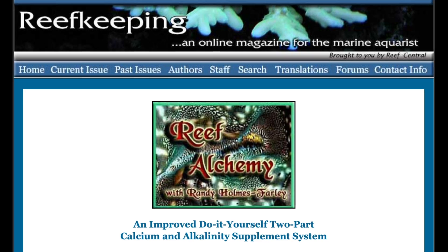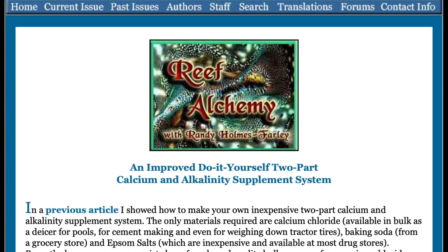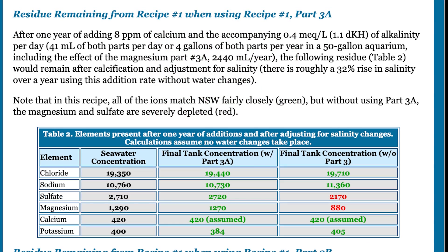Every gallon of many popular two-parts has around two cups of salt dissolved in them, so when you finish a gallon of each, you've effectively added four cups of salt to the tank — more when magnesium is included as well. There is a lot of chloride and sulfate in magnesium portions. Ray Holmes Farley's article, 'An Improved DIY Two-Part Calcium and Alkalinity Supplement System,' demonstrates this effect over time with the addition of dosing 1.1 dKH per day. After one year with no water changes, salinity rises 32% — that'd be a salinity of 47 parts per thousand. Not the kind of pollution problem that shows up in a single dose or even a month of doses.